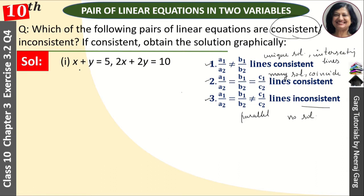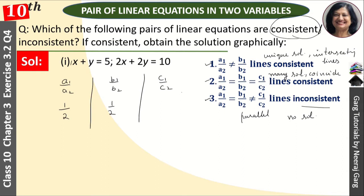And if a1 upon a2 is equal to b1 upon b2 and also equal to c1 upon c2, then the lines are coincident and consistent with infinitely many solutions. For Part (a): a1/a2 = 1/2, b1/b2 = 1/2, and c1/c2 = 5/10 = 1/2. Since all three ratios are equal, the lines are consistent with infinitely many solutions.